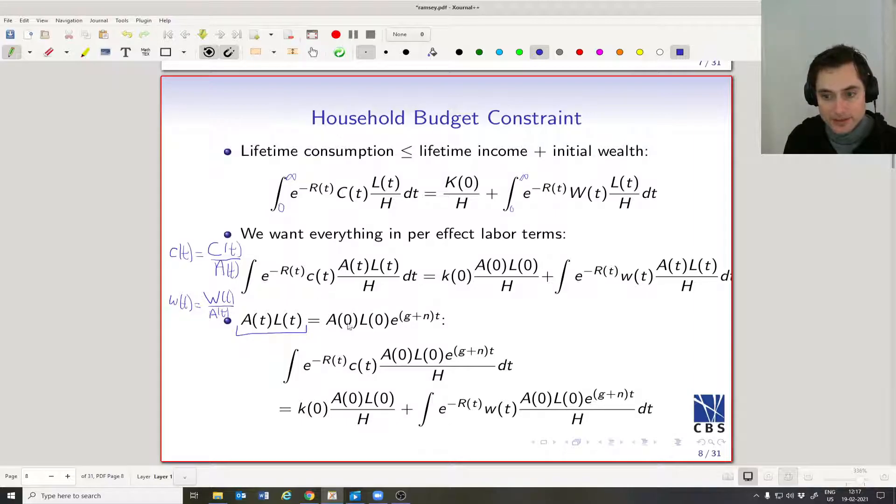So let's use this identity to substitute out A_t and L_t over here and over there. So we're just going to rewrite now. Now it's exactly the same as what we have on this line, but we're just substituting out A_t L_t with A_0 L_0 e to the power (g plus n)t. So we're just substituting in here and in here and not changing anything else. So I'm going to flip the slide now, but at the top of the next slide, I have this equation, so we don't lose anything.